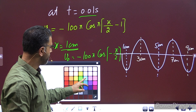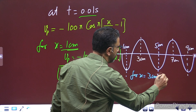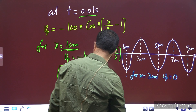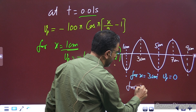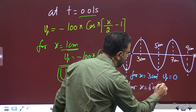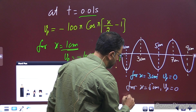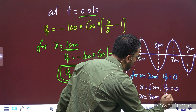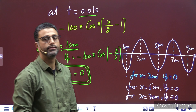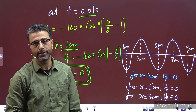So velocity for x = 3 cm: vp = 0। For x = 5 cm: vp = 0। For x = 7 cm: vp = 0। इन सभी particles के speed 0 के बराबर हैं।